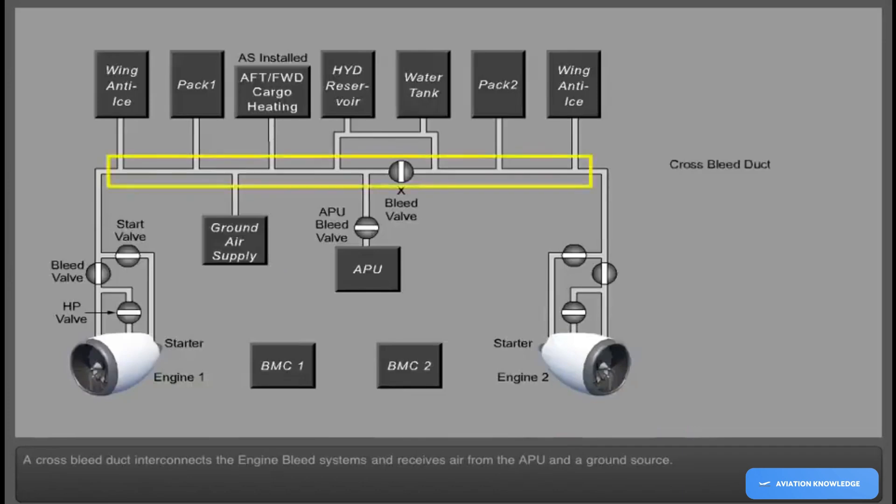A Crossbleed Duct interconnects the engine bleed systems and receives air from the APU and a ground source.